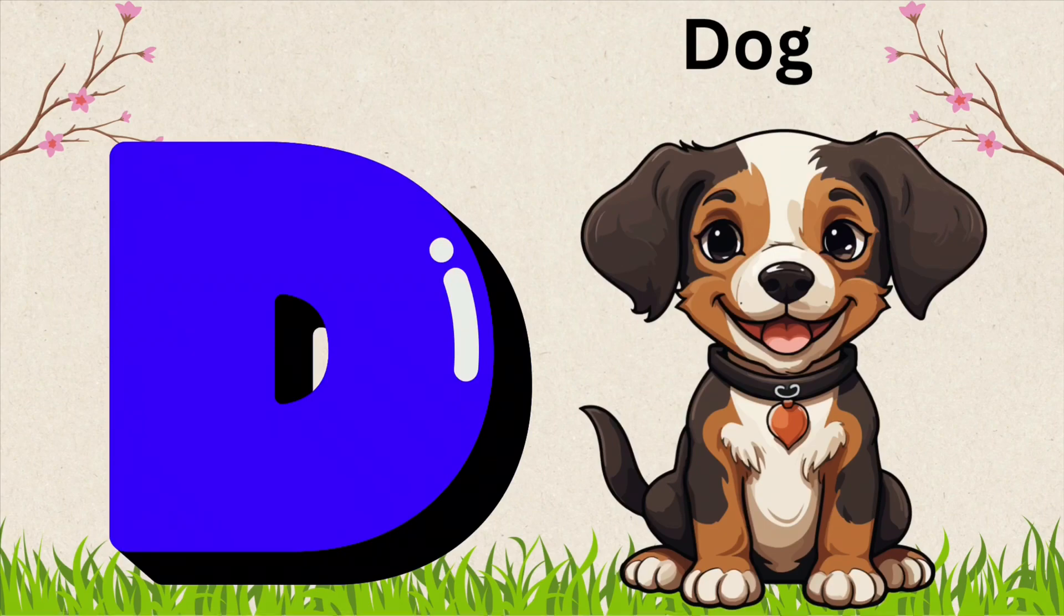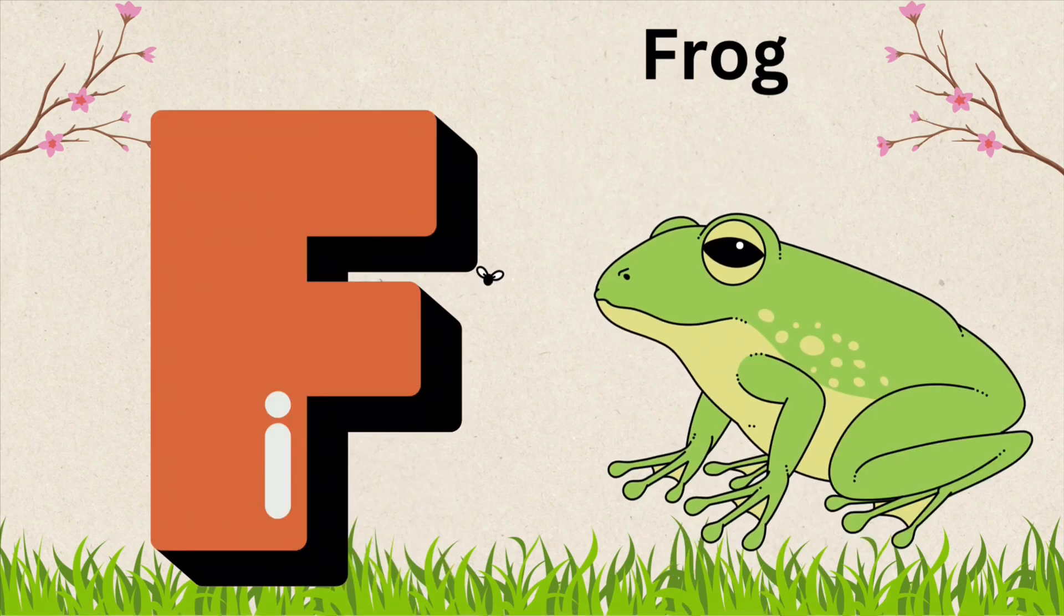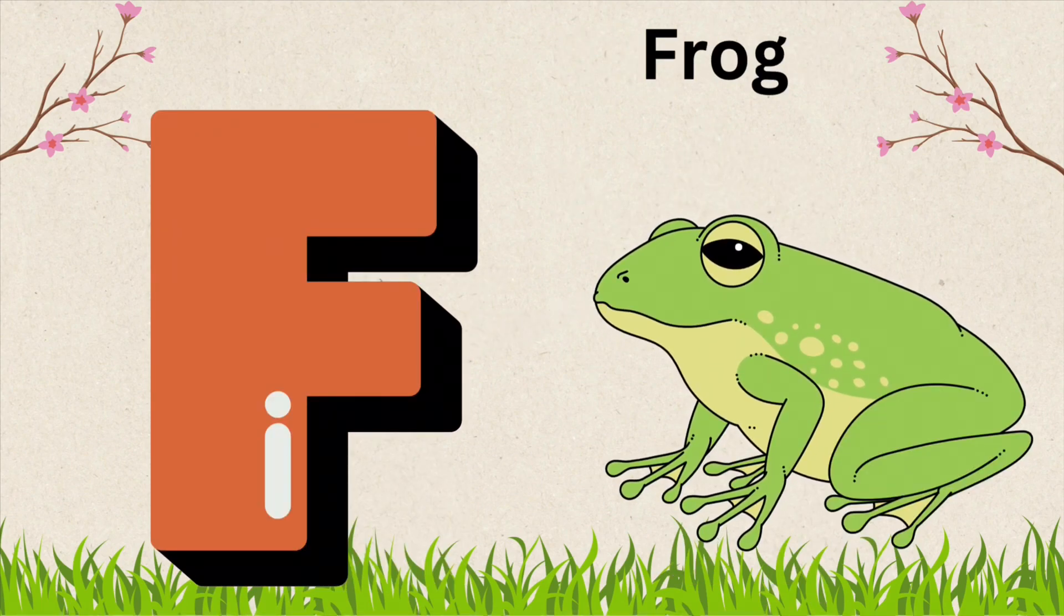D is for Dog. D, O, G, Dog. E is for Elephant. E, L, E, P, H, A, N, T, Elephant. F for Frog. F, R, O, G, Frog.